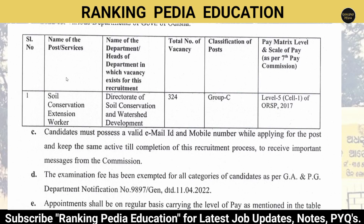The post is Soil Conservation Extension Worker under the Directorate of Soil Conservation and Watershed Development. The total number of vacancies is 324. It is a Group C post with a pay matrix scale of pay at Level 5.